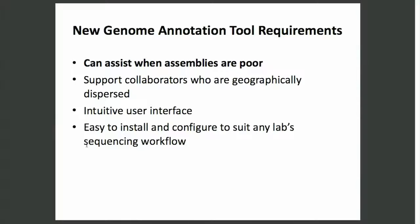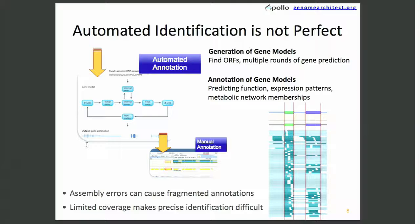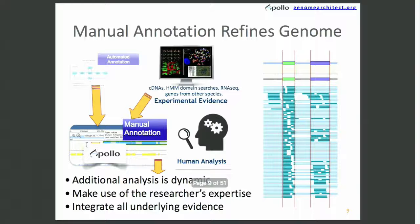With that increase of annotation data, there are new requirements for these tools. Most important is just being able to assist when assemblies are poor. Sometimes assemblies can cause fragmented annotations if your assemblies are poor, and if you have limited coverage, it makes it difficult for tools to precisely identify annotations. Being able to do manual annotations allows a biologist to come in, do analysis on demand, make use of different researchers' expertise, and integrate all underlying evidence to most correctly and accurately represent the underlying biological data.